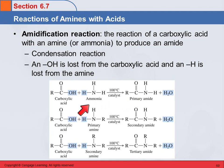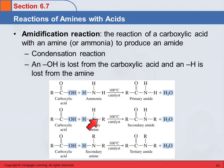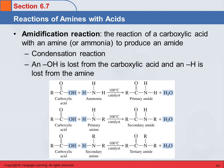Ammonia will form a primary amide. If you've got a primary amine, you're going to end up with that R group on your amide, giving you a secondary amide. A secondary amine will give you a tertiary amide.